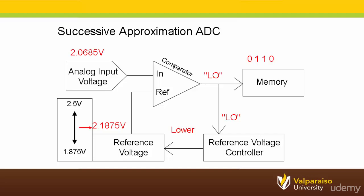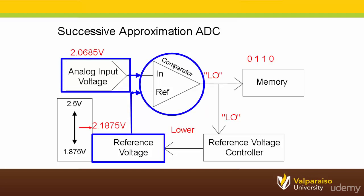For now, just know that the analog input voltage is compared to a reference voltage which is successively moved closer and closer to the analog input voltage. This will build up the binary output one bit at a time from the analog to digital converter.